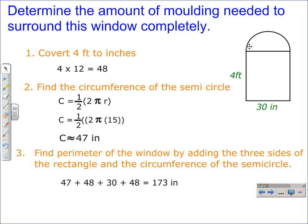Now the first thing that we need to do to find the perimeter or the amount of molding needed to surround this window completely would be convert either the feet into inches or the inches into feet. If we convert the 30 inches into feet, we'll end up with a decimal or a fraction number. And we want to avoid those if we can.